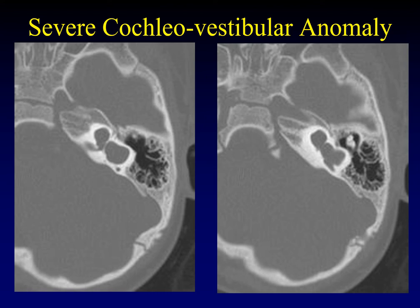Next we get into a vague area encompassing much of this spectrum that we call cochlear vestibular anomalies, graded as severe, moderate, or mild. In this situation, it looks a lot like a common cavity, but you can make out that there's going to be a cochlea anteriorly and a vestibule posteriorly. You can see the shape of the lateral semicircular canal and a posterior semicircular canal — there are bits and pieces, but the blob is divisible into different parts. This is a severe cochlear vestibular anomaly.